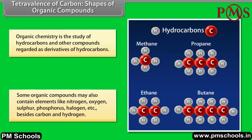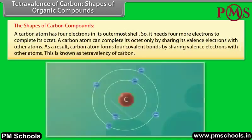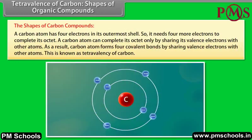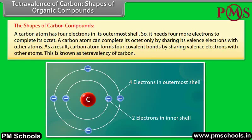The shapes of carbon compounds. A carbon atom has 4 electrons in its outermost shell, so it needs 4 more electrons to complete its octet. A carbon atom can complete its octet only by sharing its valence electrons with other atoms. As a result, a carbon atom forms 4 covalent bonds by sharing valence electrons with other atoms. This is known as tetravalency of carbon.